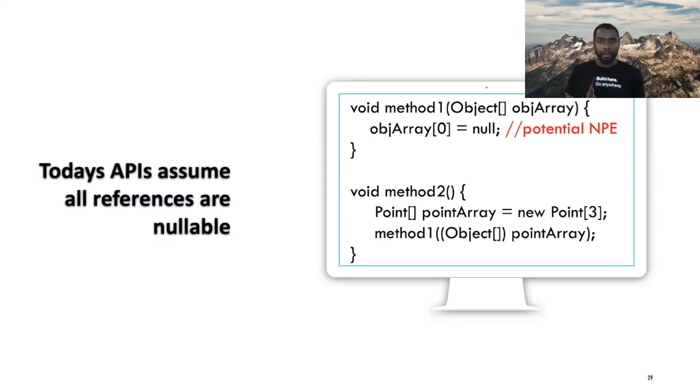Here's another example. There are a lot of APIs today that accept types like object array or object. And today all types that subclass object are nullable, so you can assign null to them. But with inline types, that's not true. In this example we have a method that accepts an object array and then writes null to the first element. With inline types you could potentially get a null pointer exception since it's illegal to write null to an inline type array. So these are some of the issues that can occur when using inline types.